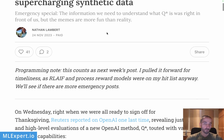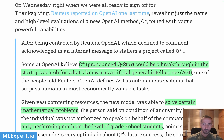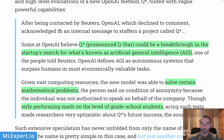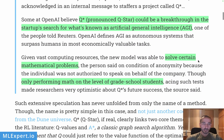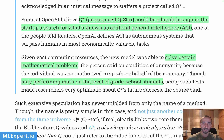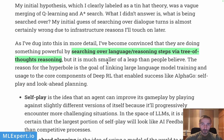Here is essentially the most important part of the breakthrough from the Reuters news: Q* — pronounced Q-star — could be a breakthrough in the startup's search for artificial general intelligence. Anonymous sources from OpenAI say it can solve certain mathematical problems and is performing math at the level of grade school students. But it appears to be a novel way to improve the model by itself, which is very interesting.